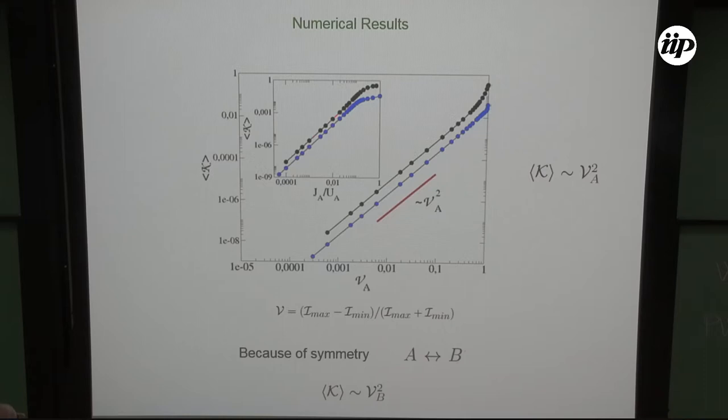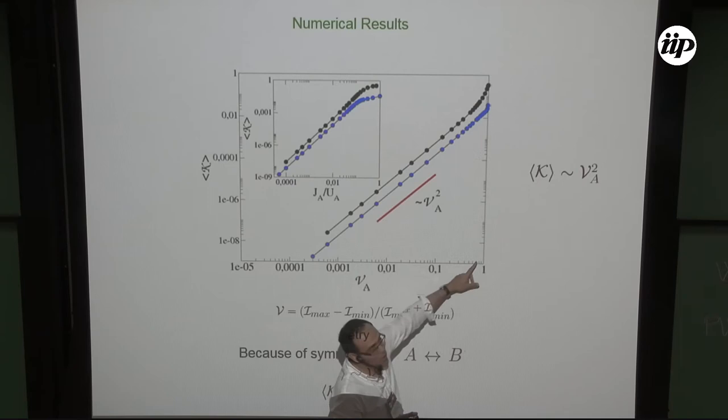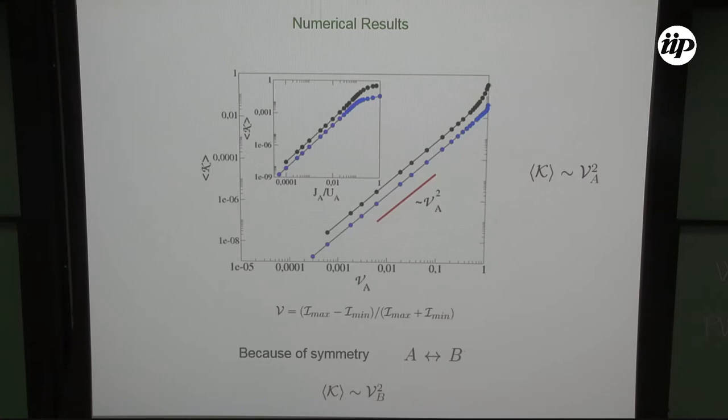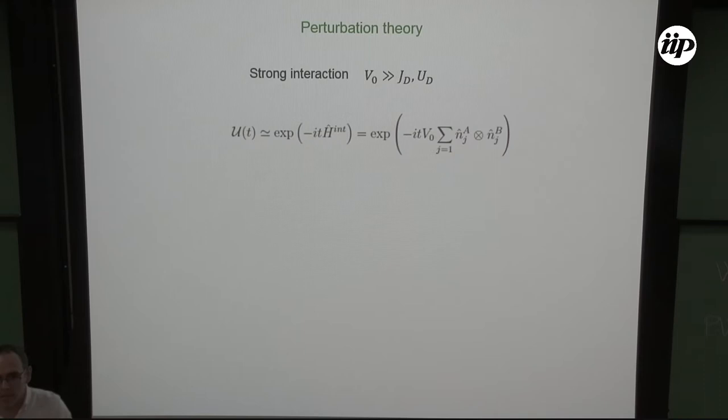There are two curves shown: one where gas B is prepared in a superfluid state, and we see a crossover corresponding to the Mott insulator-to-superfluid transition. Interestingly, even for large values of the visibility — near one — the quadratic dependence holds, suggesting the result is more general than expected.